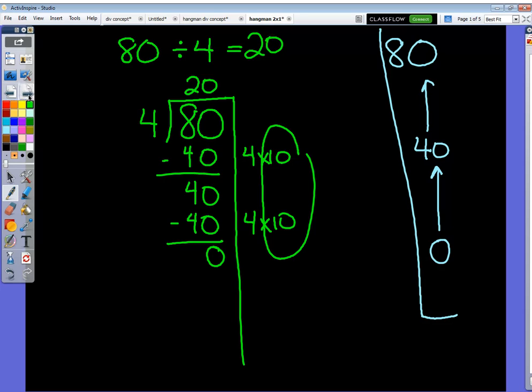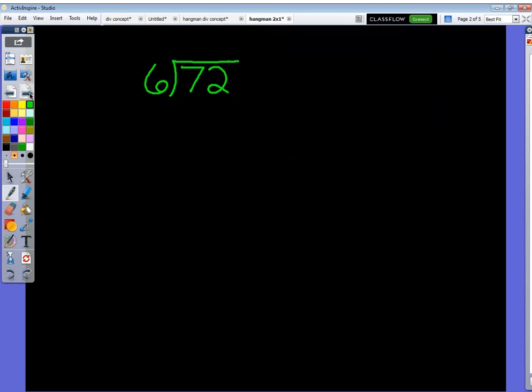In this example, we're going to do 72 divided by 6. Start by drawing my line. And again, I'm going to take a guess at how many 6's will at least get me close to 72. I know that 6 times 10 is 60. That gets me actually most of the way there. That's a pretty good jump.